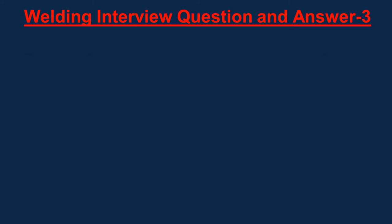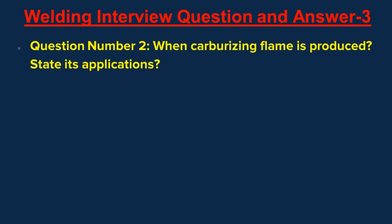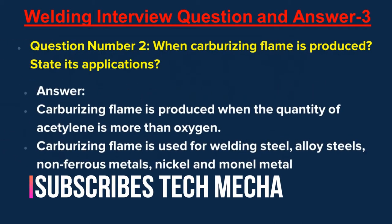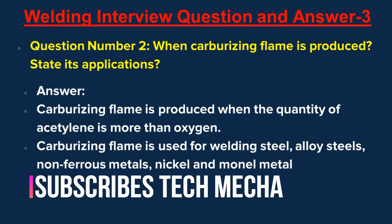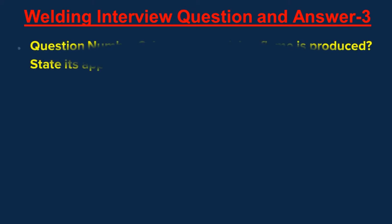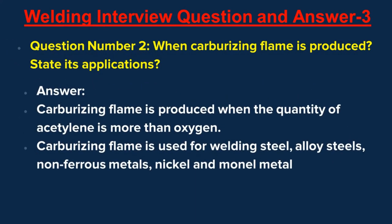Question number two: When is a carburizing flame produced? State its applications. Answer: Carburizing flame is produced when the quantity of acetylene is more than oxygen. Carburizing flame is used for welding steel, alloy steels, non-ferrous metals, nickel, and monel metal.